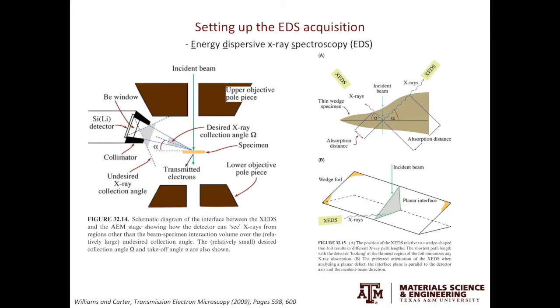This slide shows you the setup of EDS acquisition in TEM. EDS stands for energy dispersive X-ray spectroscopy. When the EDS detector is inserted, it's between the upper and lower objective pole pieces. Notice when X-ray is generated from inelastic scattering, they are emitted in all directions. The EDS detector can only capture a small proportion of the total amount of X-ray generated.